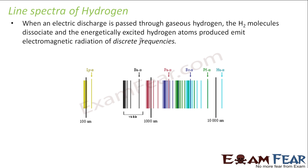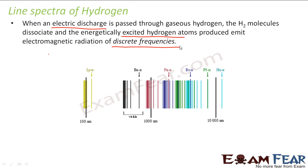When we talk about line spectra of hydrogen, how and when do we obtain it? As mentioned before, we get atomic spectra when we supply some external energy and make the atom excited. In this case, we supply that external energy when an electric discharge is passed through gaseous hydrogen. This electric discharge acts as the external energy. The hydrogen molecules dissociate and energetically excited hydrogen atoms emit electromagnetic radiation of discrete frequencies. This is the basic foundation of emission spectra.